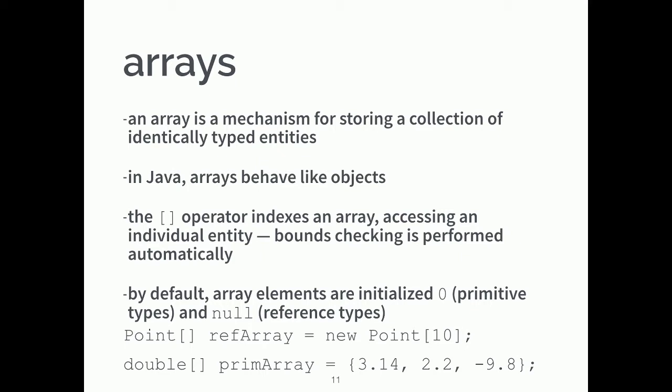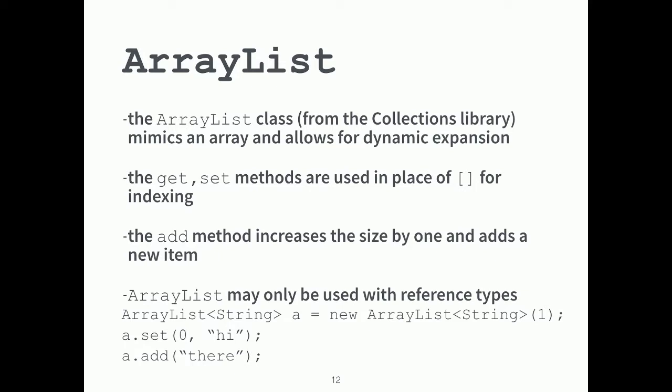We talked briefly about arrays, which is a mechanism for storing a collection of identically typed objects. In Java, arrays behave like an object and we use the bracket operator to index into them. By default, all array elements are initialized to zero for primitive types and null for reference types. ArrayList is a class from the collections library you'll use a lot this semester. Instead of bracket operators, you use get and set methods to access elements. The add method increases the size by one and adds a new item — you don't have to deal with resizing. The caveat is that ArrayList can only be used with reference types.